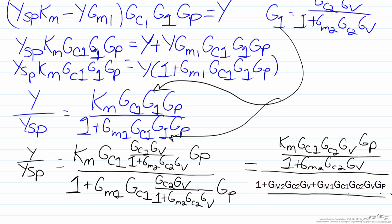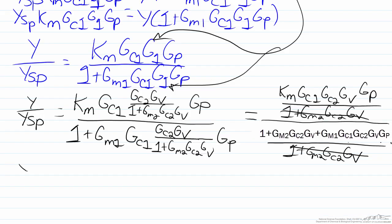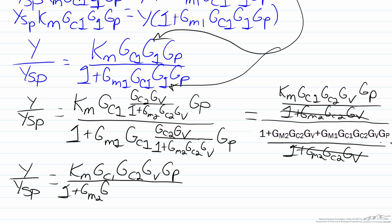This will be divided by the common denominator of 1 plus Gm2 Gc2 Gv. Those denominators will cancel and we are left with our final transfer function of y over ysp which equals Km Gc1 Gc2 Gv Gp divided by 1 plus Gm2 Gc2 Gv plus Gm1 Gc1 Gc2 Gv Gp.